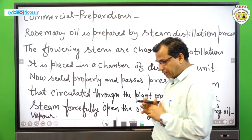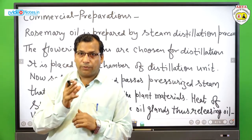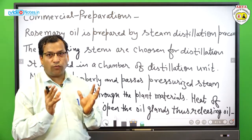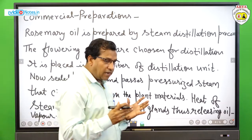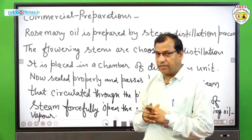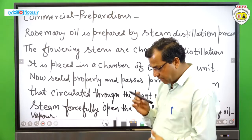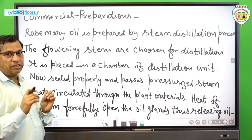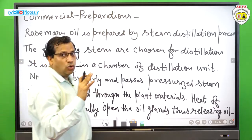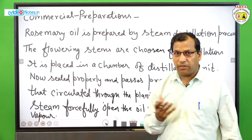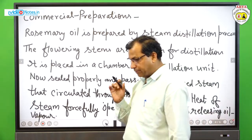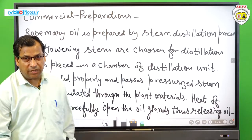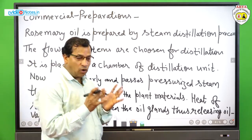First, we collect the flowering tops and flowering stems of rosemary, wash them, and dry them slightly — not completely dry, just removing excess water. Then they are loaded into the vessel of the steam distillation unit, such as a round-bottom flask. After loading, steam or hot air is passed from the bottom.